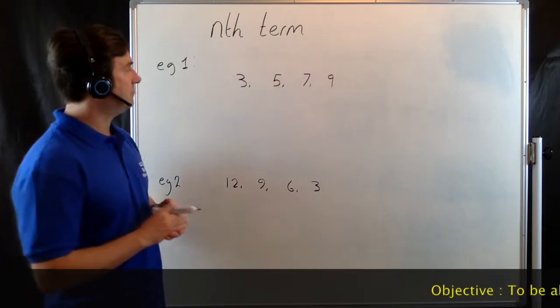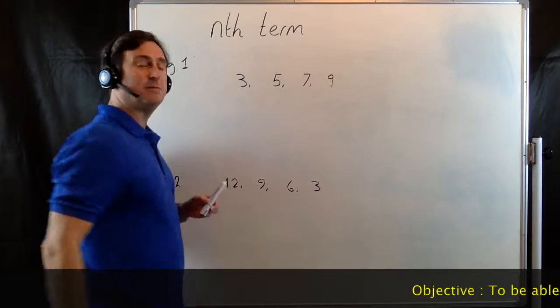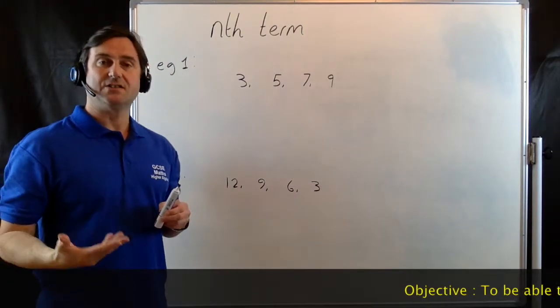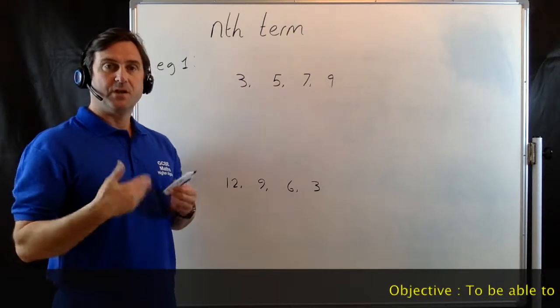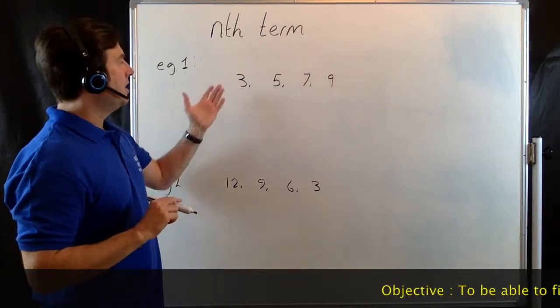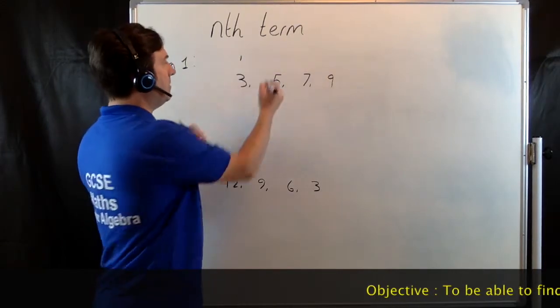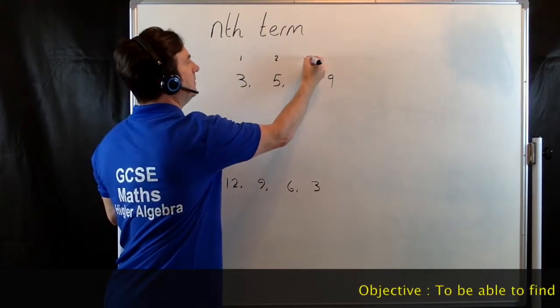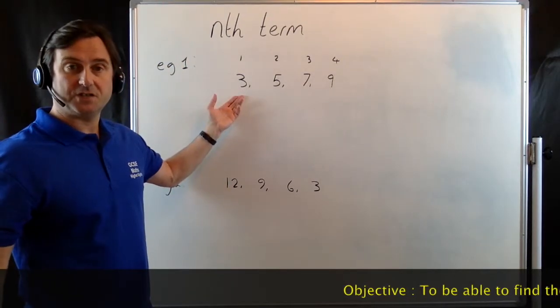A term-to-term rule would be looking at your sequence and saying, what's this going up in? It's going up in twos, so we're adding two each time. The term-to-term rule would be add two. The position-to-term rule is asking you to relate the position number to this term in the sequence.